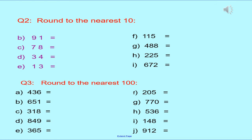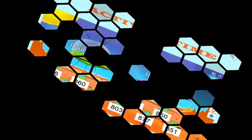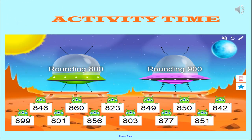Now, dear children, try to solve these questions by yourself. Also try to solve this fun activity: some numbers are given and you have to take them to the correct spaceship. Numbers which round up to 800 are to be taken to the green spaceship, and numbers which round up to 900 are to be taken to the purple spaceship. Do this fun activity and enjoy!